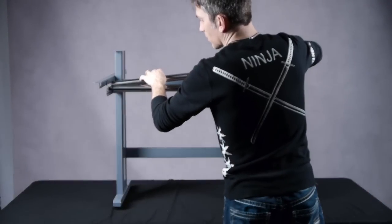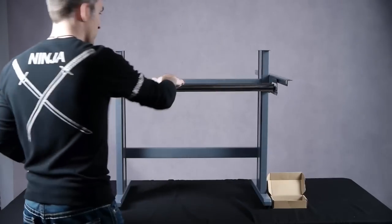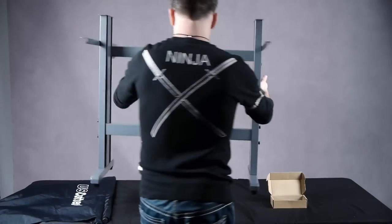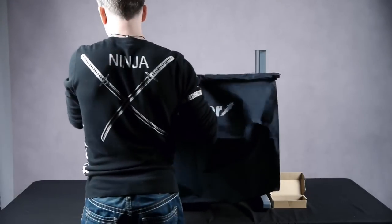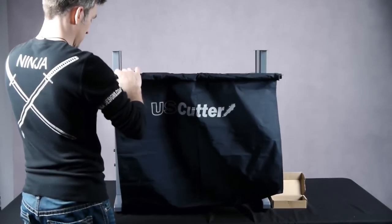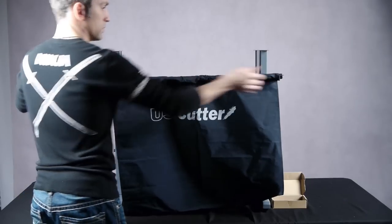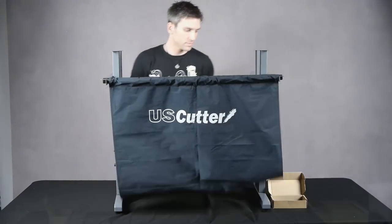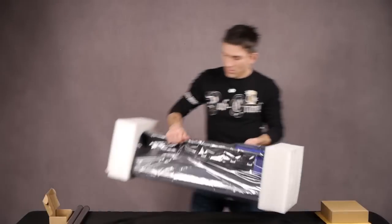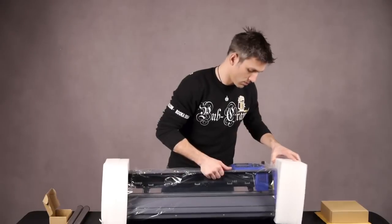Once you've got everything put together, you can place the roller bars in the brackets, then set the catch basket in its place. As far as the stand is concerned, we're done.